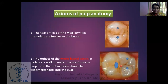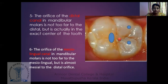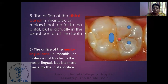Then axioms of pulp anatomy: the two orifices of the maxillary first premolar are further buccal; the orifice of the mesiobuccal canal in molars is well under the mesiobuccal cusp; and the outline form should be widely extended into the cusps. The orifice of the palatal canal in the maxillary molar is not far from the lingual, but actually in the center of the mesial half of the tooth. The orifice of the distobuccal canal in the maxillary molar is not far from the distobuccal, but is almost buccal to the palatal orifice. In mandibular molars, the orifice of the distal canal is not too far distally but is in the exact center of the tooth. The orifice of the mesiolingual canal is not far to the mesiolingual but is almost mesial to the distal orifice.